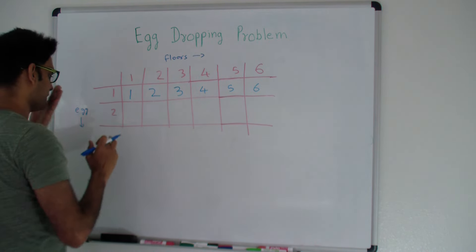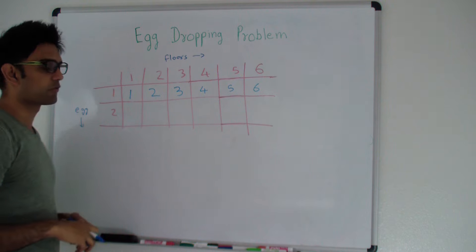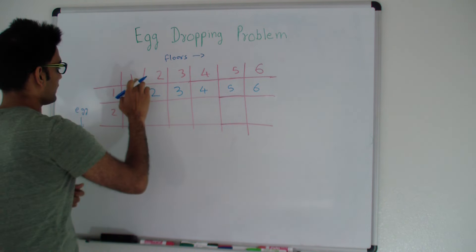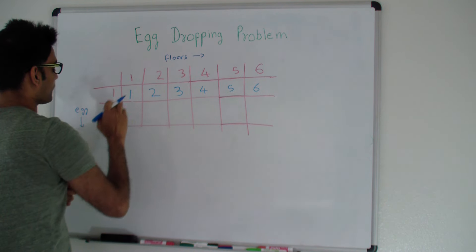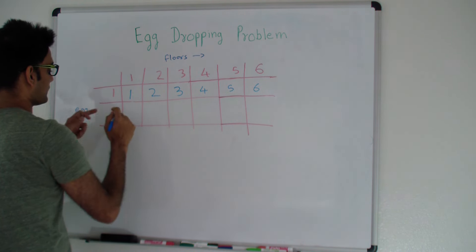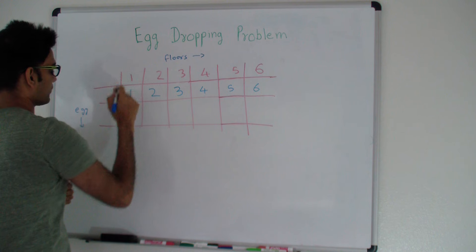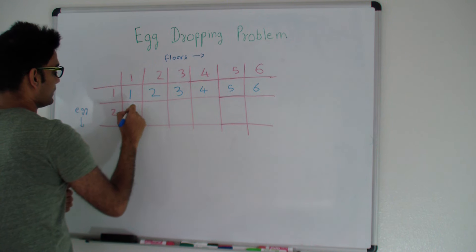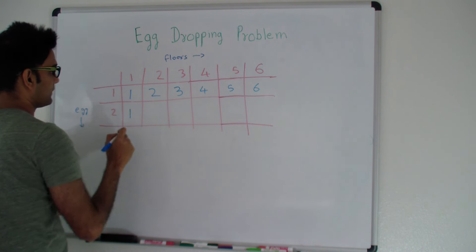Let's see how we can improve with 2 eggs. With 1 floor and 2 eggs, since the number of eggs is more than the number of floors, it doesn't help. So you just get the value from the top, which is 1.